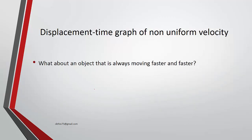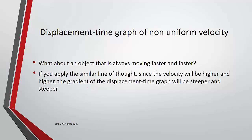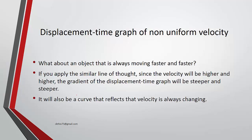The opposite case is an object that is always moving faster and faster. Since the velocity is higher and higher, the gradient of the displacement graph should be steeper and steeper. It will also be a curve, reflecting that velocity is always increasing.